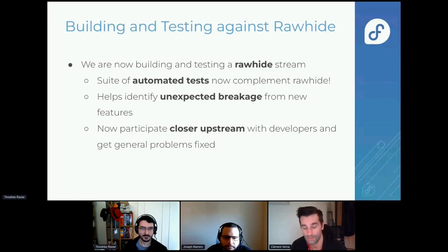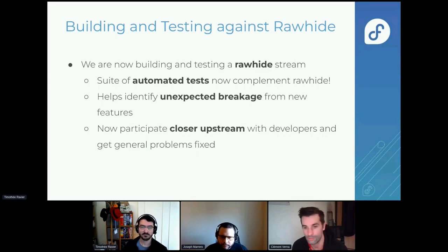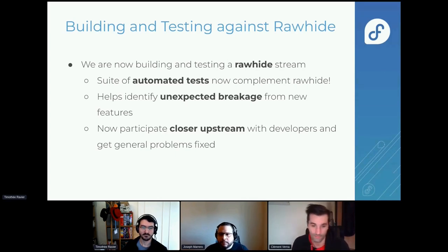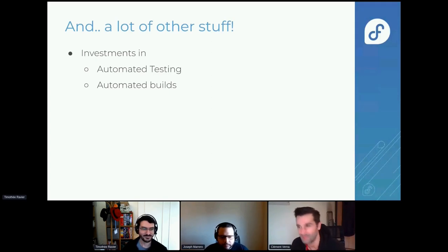In addition to the three official streams — stable, testing, and next — we now have a nightly stream that we use to do a build every day using the latest Rawhide content. It's ready for us to run our automated tests and catch early any potential breakage that happens in Rawhide. This allows us to flag issues earlier and sometimes fix things before they arrive in the next or testing stream.